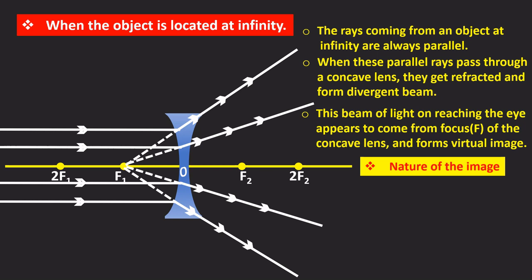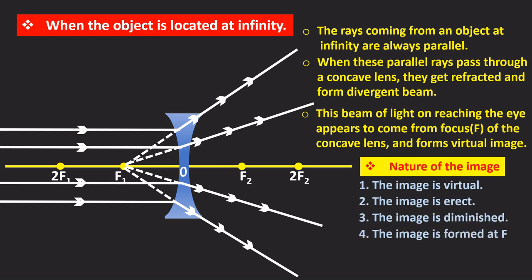So now let us see what is the nature of the image. The image is virtual, it is erect and also diminished. The image is formed at F on the same side of the lens.